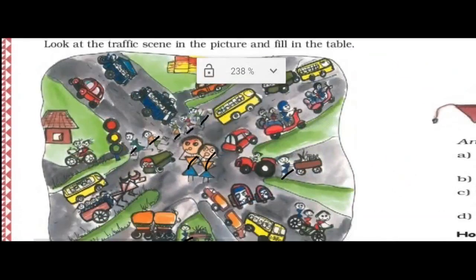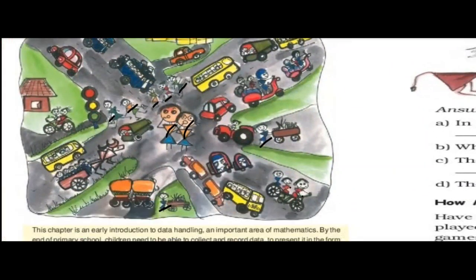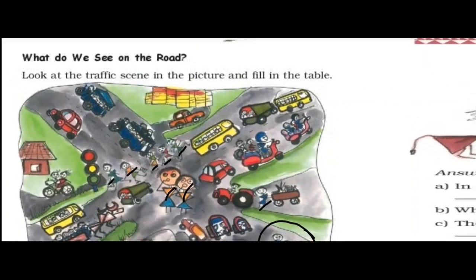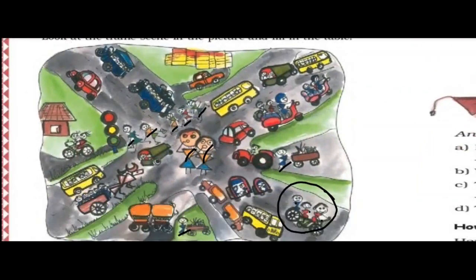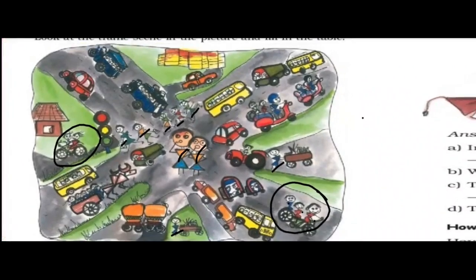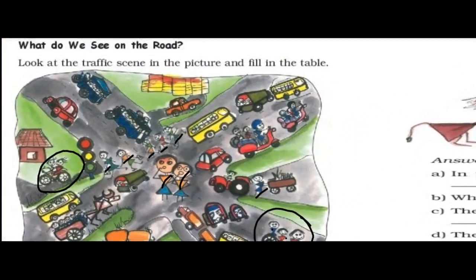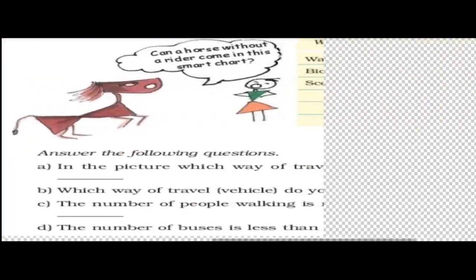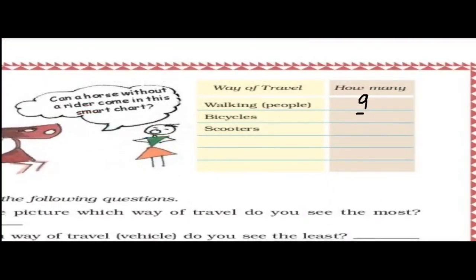Now, the ones on bicycles — let us find the people who are on bicycles. Here: 1, 2, 3, 4, 5 people are there on bicycles. So there are 5 people on bicycles. We will write 5 here.